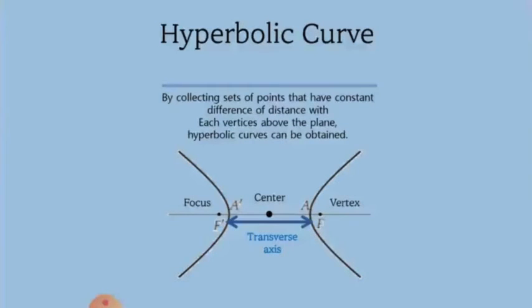Also, the line AA' is the main axis, and the center of the main axis is called the center of the hyperbolic curve.